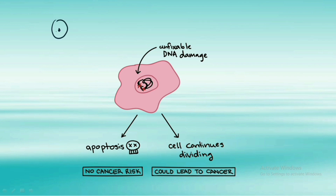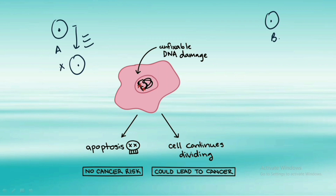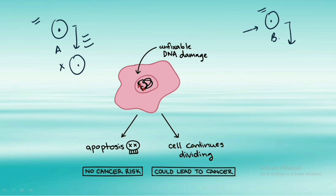Consider we have cell A and cell B. Cell A has completed its life and performed all of its functions, so now this cell is supposed to die. The general mechanism by which a cell in the body dies is apoptosis. Now consider a second situation where cell B has some DNA damage. If the body identifies this DNA damage, the cell must die — and if it does, that is apoptosis, and there is no cancer risk.